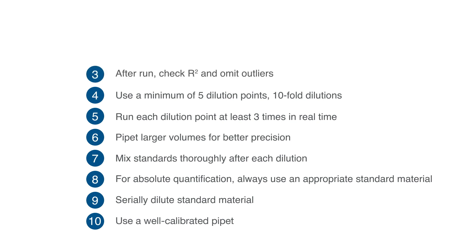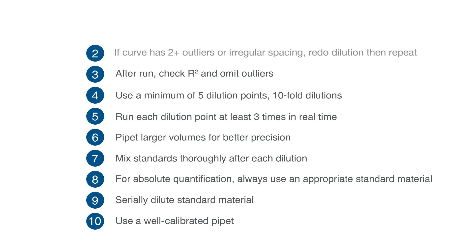Number 3: after the run, check your R-squared, look for outliers, and omit them. Number 2: if the curve has more than one or two outliers, or if the spacing between any of your points is irregular, redo the dilution and repeat the entire curve.